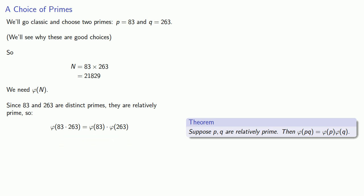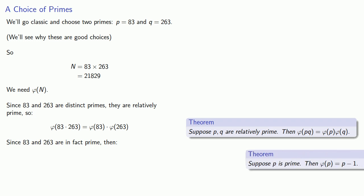Of course, we need to find phi of 83 and phi of 263. And since 83 and 263 are in fact prime, then we have a theorem that says if p is prime, then phi of p is just p minus 1. And so phi of 83 is going to be 82 and phi of 263 is going to be 262. And their product will be, which gives us phi of n.